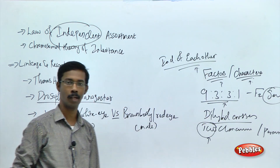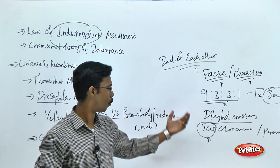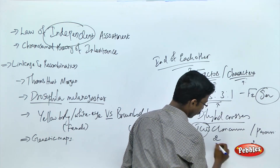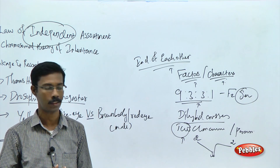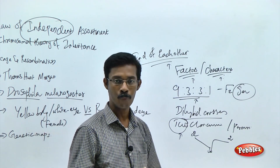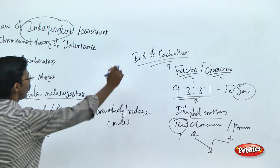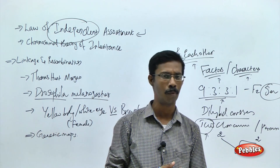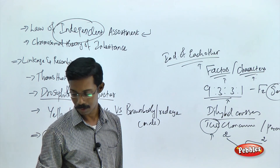You should have studied something like combinations and permutations in your math classes. What happened here is that the 2 characters are going to be combined with each other, forming permutations or combinations, and they are going to be transferred to the next generations independently. That is the law of independent assortment, proposed by Mendel through his studies of dihybrid crosses.